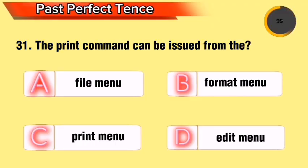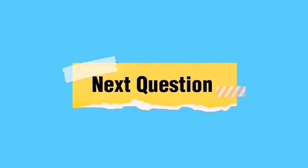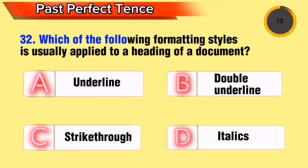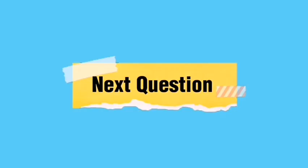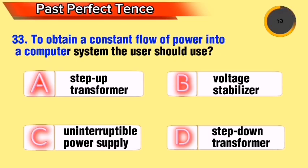Question 18: Which of the following formatting styles is usually applied to a heading of a document? To obtain a constant flow of power into a computer system, the user should use what device?